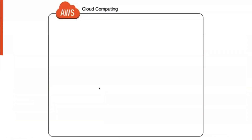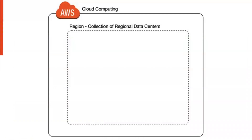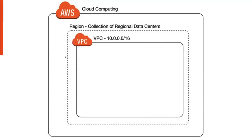Let's take a look at AWS. They have different regions, which are basically collections of regional data centers — US East, US West, and so on. Within a region, the first thing you do when you log in is create a VPC. When creating a VPC, you have to specify a CIDR. That's the top-level CIDR, and it is regional — important to remember.